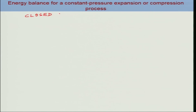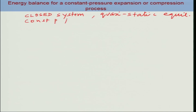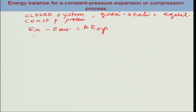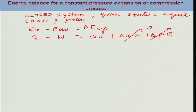Let us now consider an example of a constant pressure expansion and compression process. We have a closed system undergoing a quasi-static equilibrium at constant pressure. Starting with the generalized energy balance of the first law, E-in minus E-out equals delta E of the system. If the only energy transfers are in the form of heat and work, then changes are given in terms of Q and W, which equals delta U plus delta KE plus delta PE. Considering no change in kinetic or potential energy, those terms are zero.